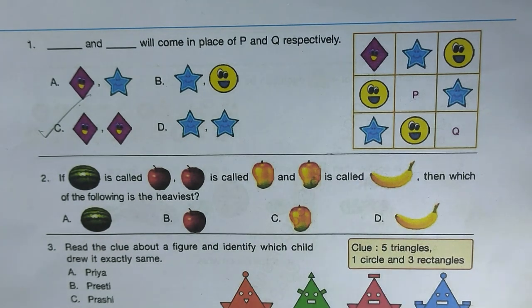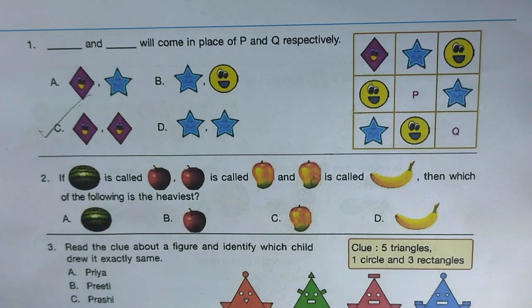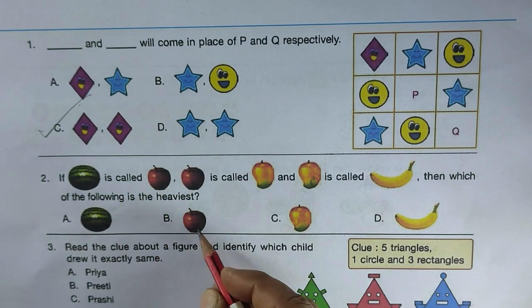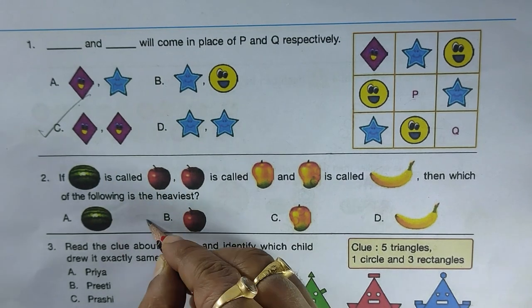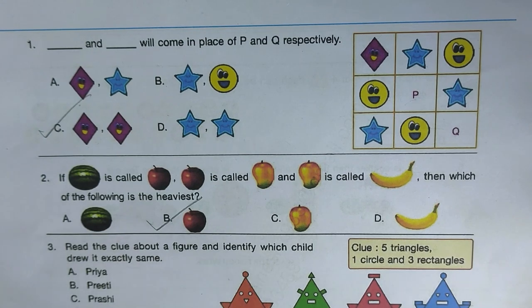Next question: if watermelon is represented by apple, apple by mango, and mango by banana, which is the heaviest? The heaviest is watermelon, which is represented by apple. So option B, apple, is the answer.